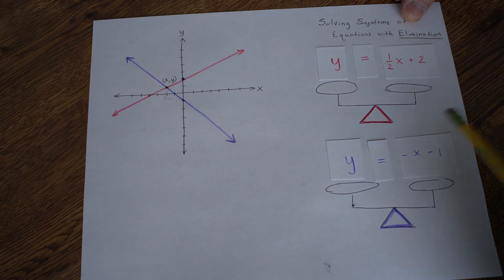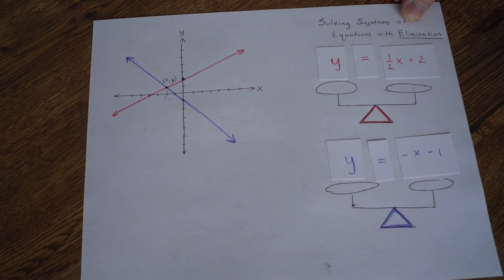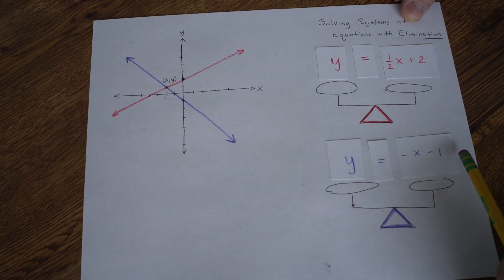But we just as well could have modified the purple line. As long as you do stuff to both sides, like doubling both sides, or halving both sides, it will work. So we could have cut all of these in half to get a negative 1 half here. And then those would have eliminated.